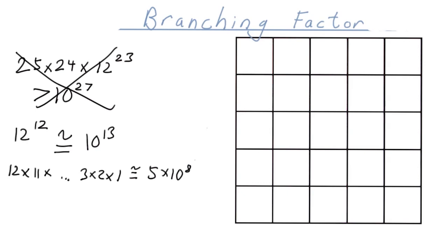I guess we could redo our estimate as 25 times 24 times 13 12s in a row, times 5 times 10 to the 8th. That's approximately equal to 3 times 10 to the 23rd.